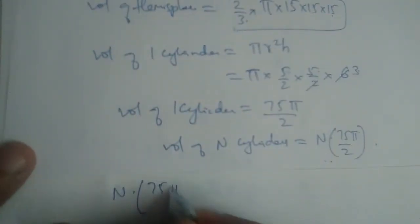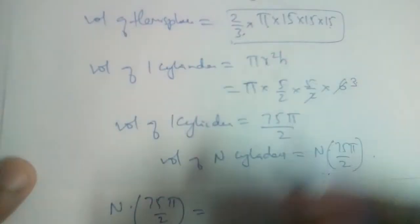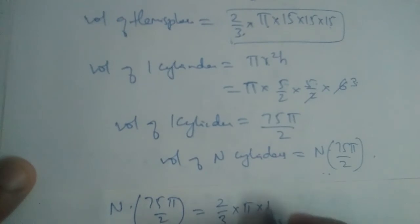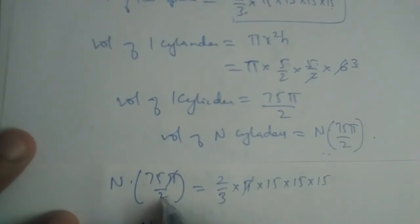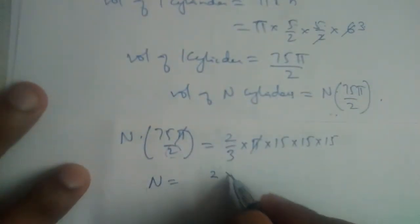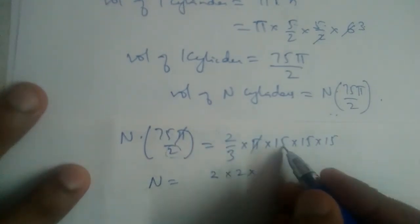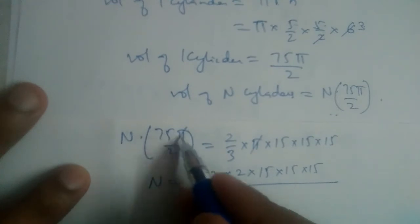We equate n times 75π/2 with the volume of the hemisphere: 2/3 π times 15³. π cancels, so n equals 2 times 2 times 15 times 15 times 15 divided by 75 times 3.